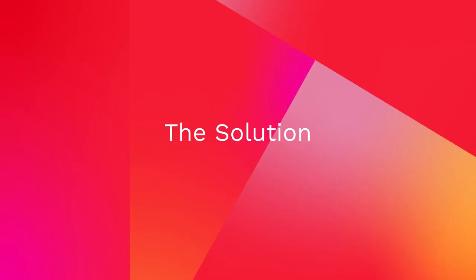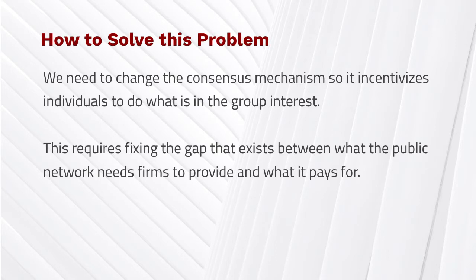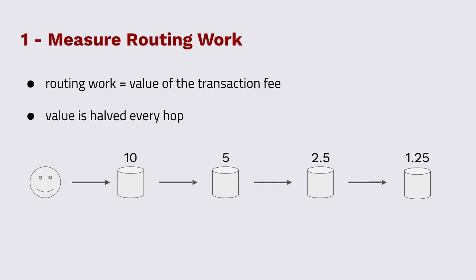There is a solution, and this is the really exciting news. Just like the solution to the tragedy of the commons problem, what we need to do is change the incentive system. We need to make it so that individuals have an incentive to do what it is that we want the group to do. What that means is we need to make it so that supporting the public network is what our blockchain actually pays for. This is how Saito accomplishes it.